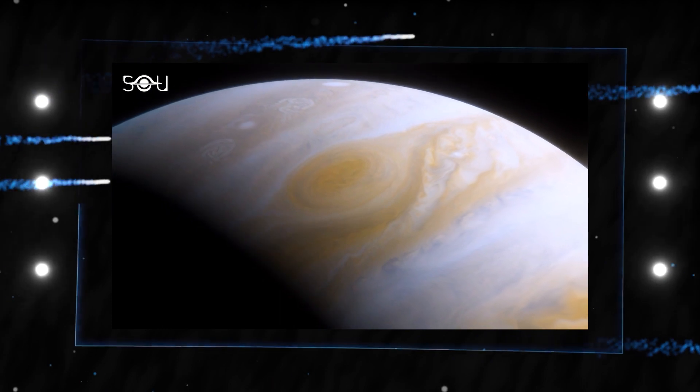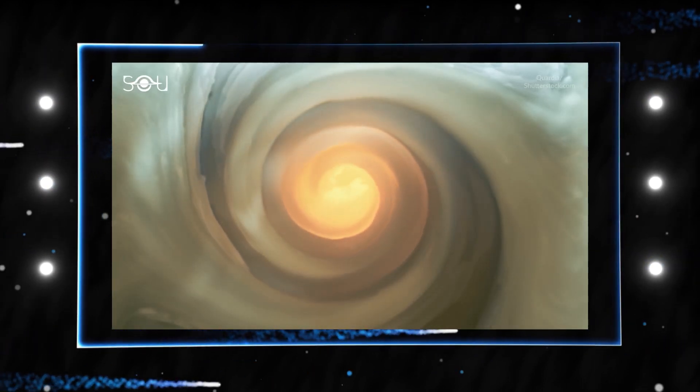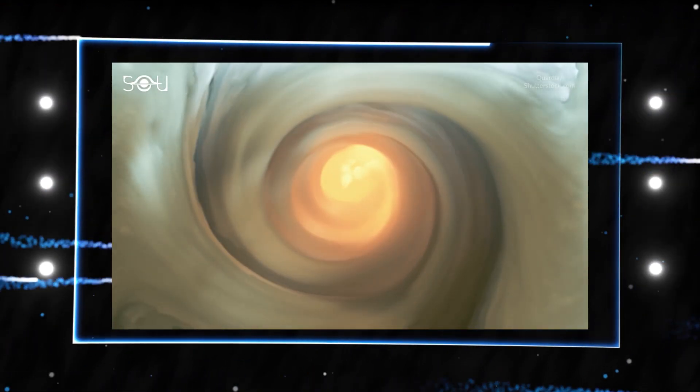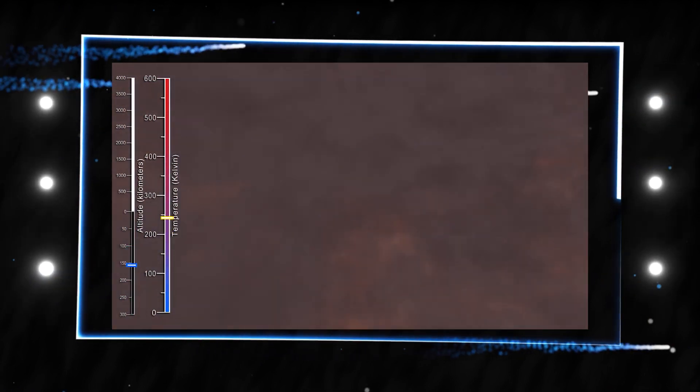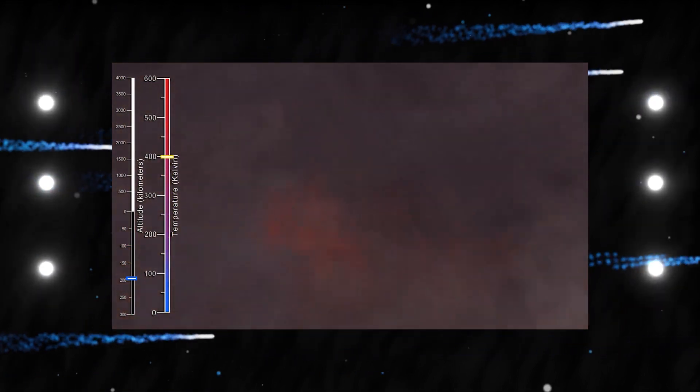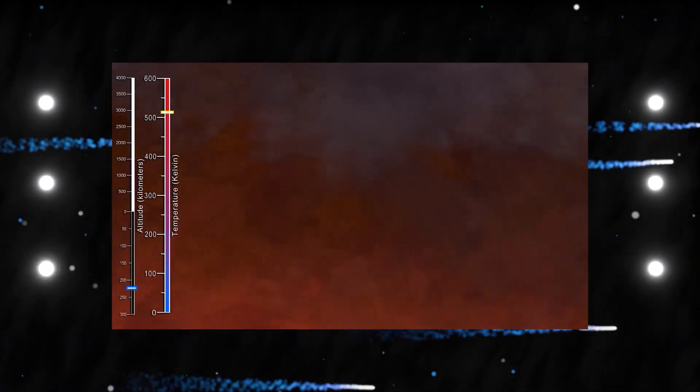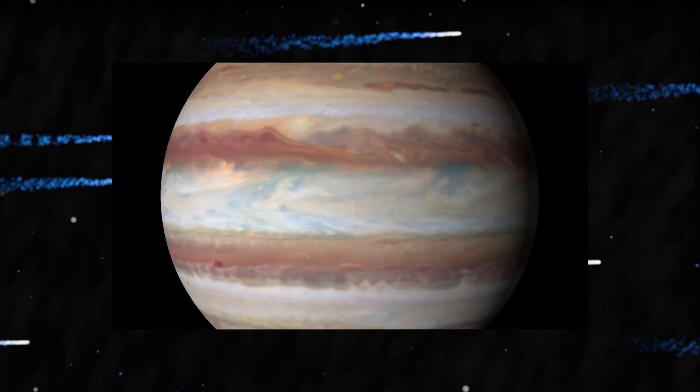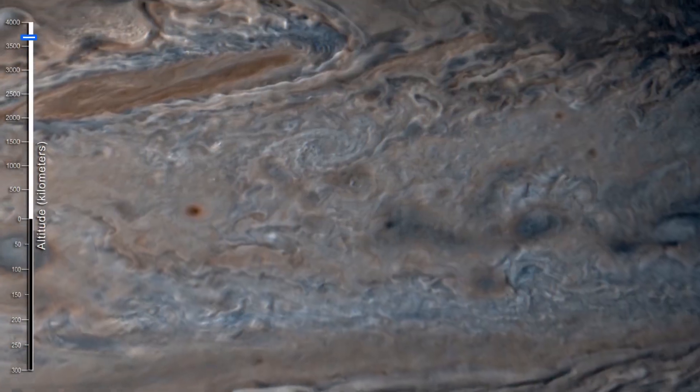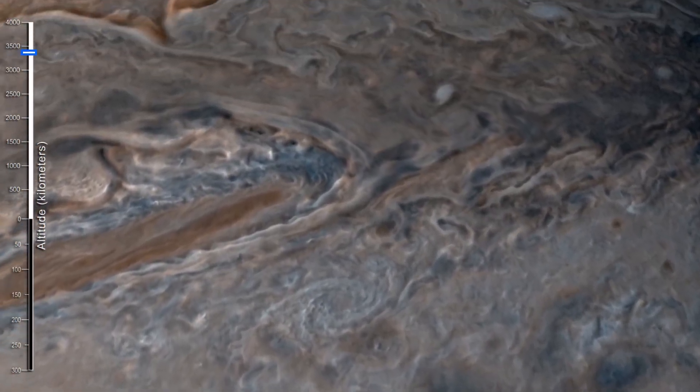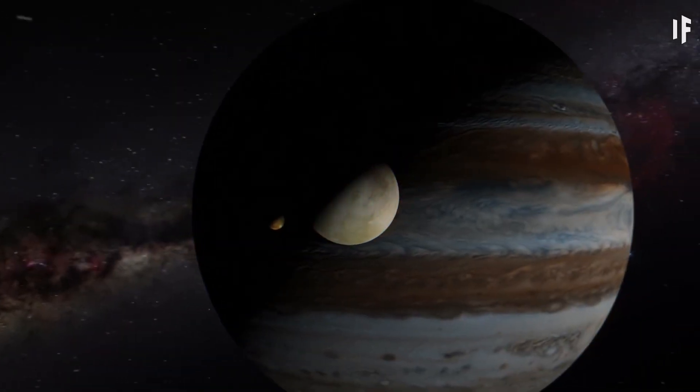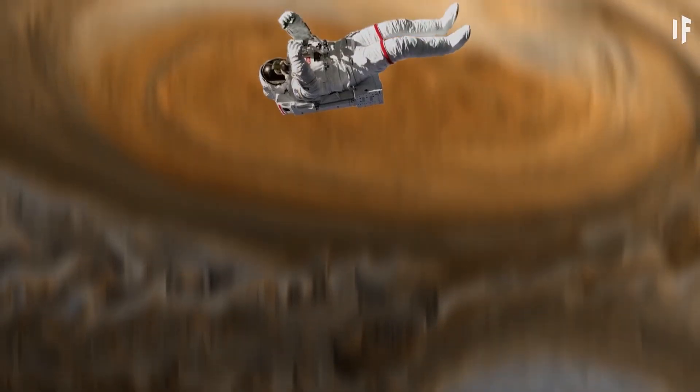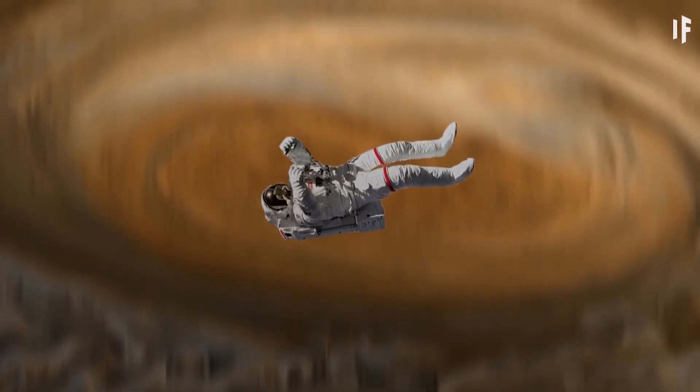Because our vision does not pick up infrared radiation, the colors in these images do not match what the human eye would see when observing Jupiter. However, the image processors for these stunning shots, citizen scientists Judy Schmidt and Ricardo Huzo of the University of the Basque Country in Spain, mapped longer infrared wavelengths to the red end of the visible spectrum and shorter wavelengths towards the blue, mimicking how the human eye perceives visible light.